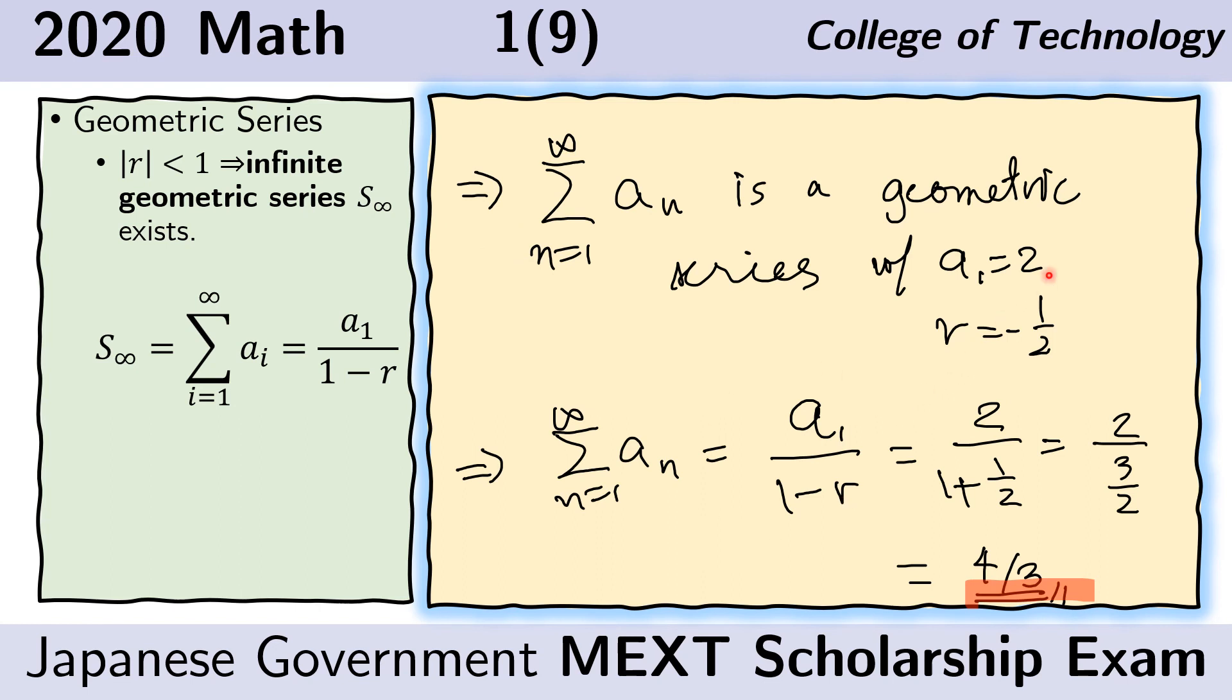Now, we just have to plug in the values of a sub 1 and r into the formula for the infinite geometric series. And that is, and this is that formula. So, a sub 1 is 2, and here r is negative 1 half. And so, if we simplify this, we get 4 thirds.